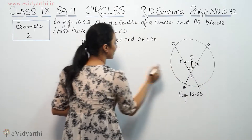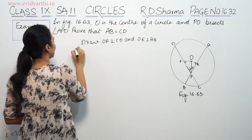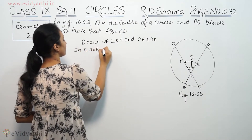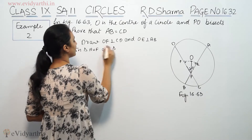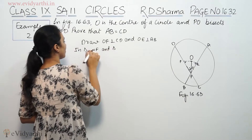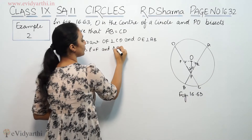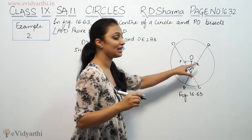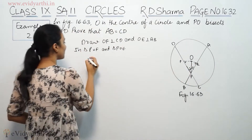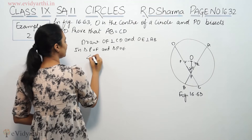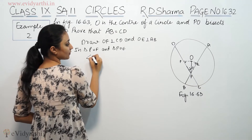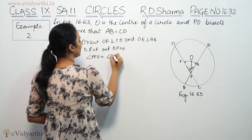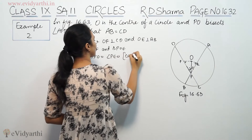So first, in these two triangles — in triangle POF and triangle POE — we have 90° angles. Angle PFO is equal to angle PEO, each equal to 90 degrees.